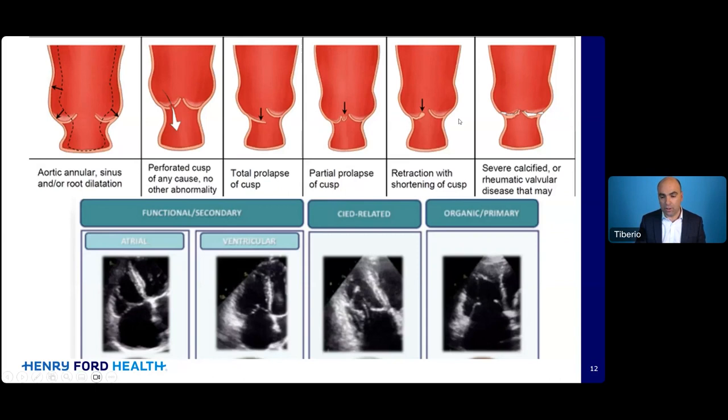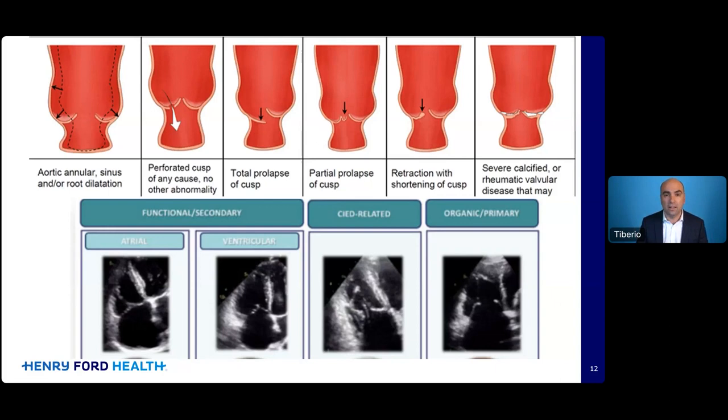Aortic valve regurgitation mechanisms include stretching of the valve, a tear in the leaflet from infection, a prolapse or flail, or calcium. The tricuspid valve can become leaky because the heart stretches, or sometimes a pacemaker or defibrillator lead running through the valve over years can lead to tricuspid regurgitation in some unfortunate few.